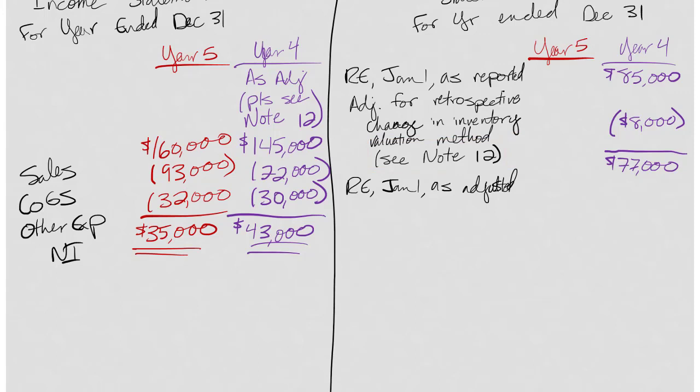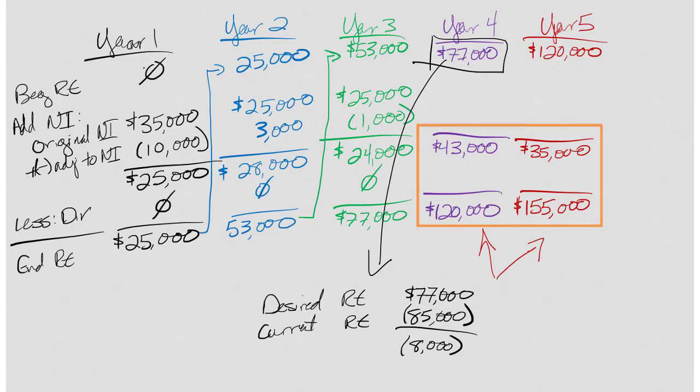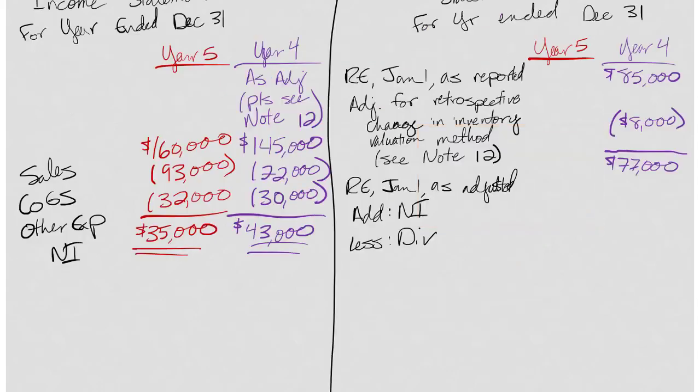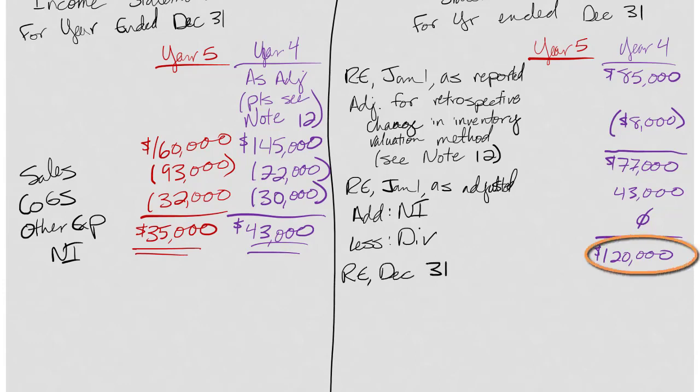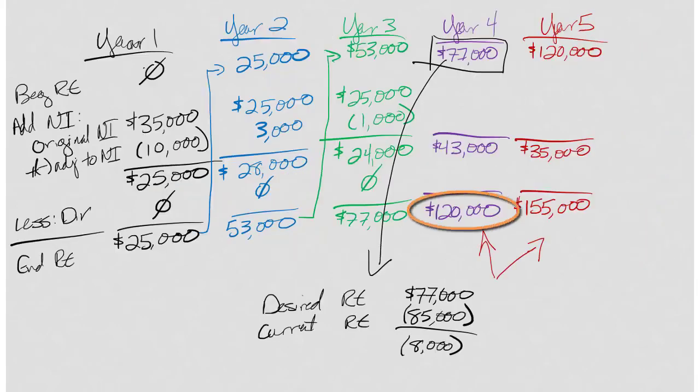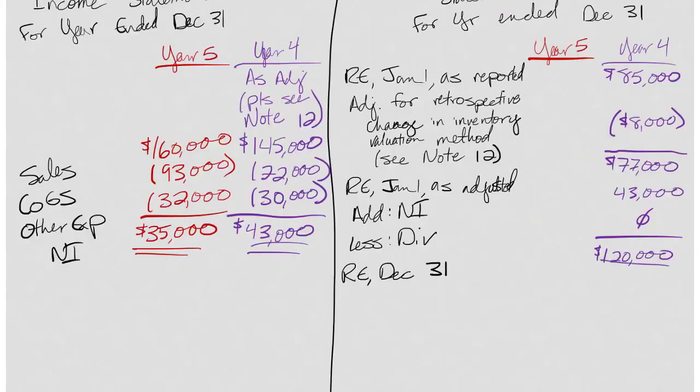I take the $85,000 minus that $8,000 and that gets me to $77,000, which is retained earnings as adjusted. Now I've told investors everything they need to know - how much I've changed retained earnings because of changing inventory method and where they can go to find the details. Next, I'm going to finish the statement as I've done in the past. I'll add net income and subtract dividends. I'll use the updated net income of $43,000 from this table. Dividends are zero. So 77 plus 43 gives me a balance of $120,000, which is my retained earnings December 31st. This matches the calculation right here.